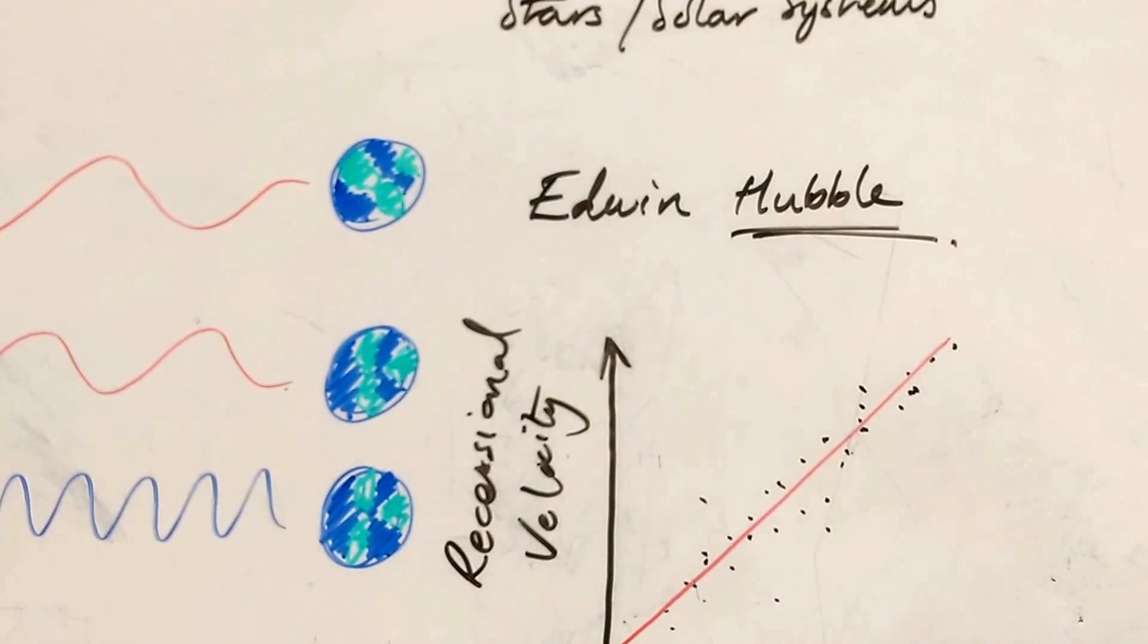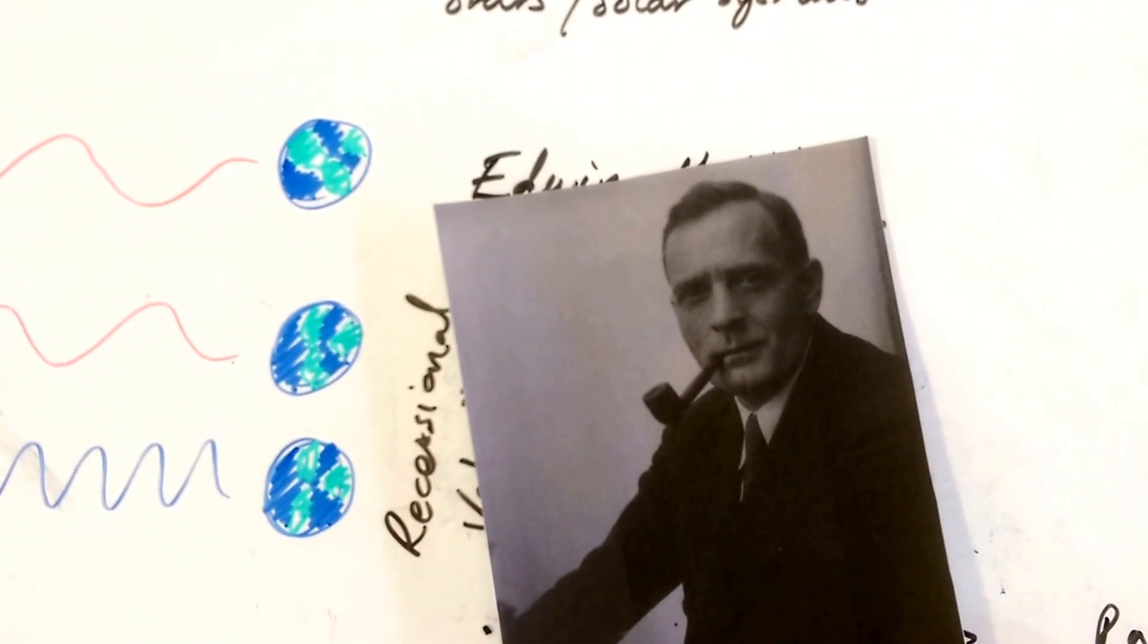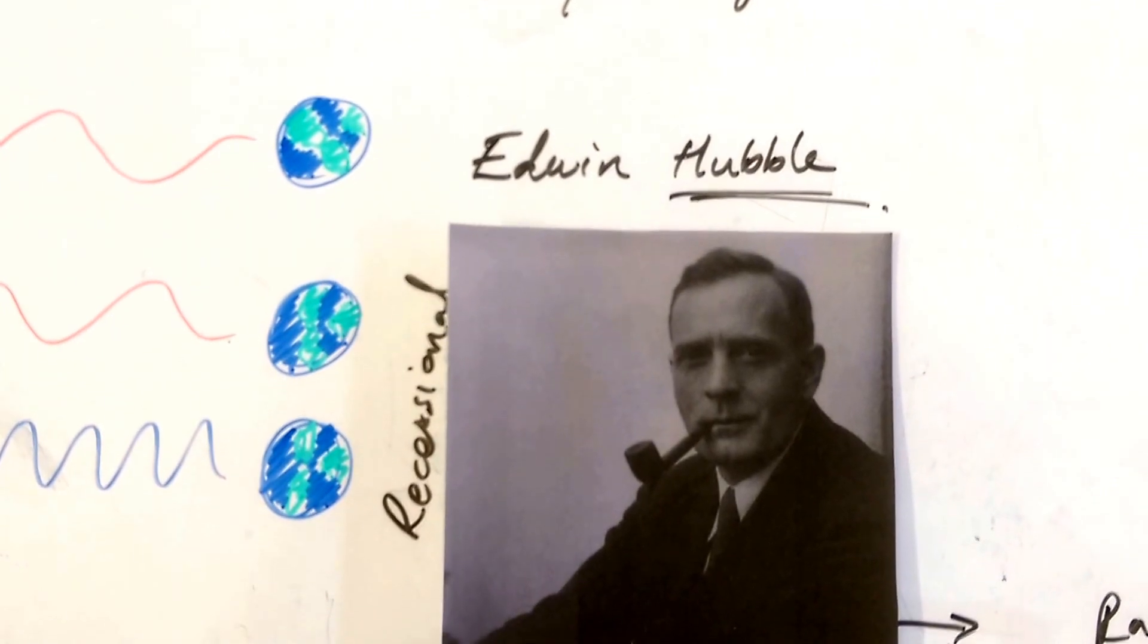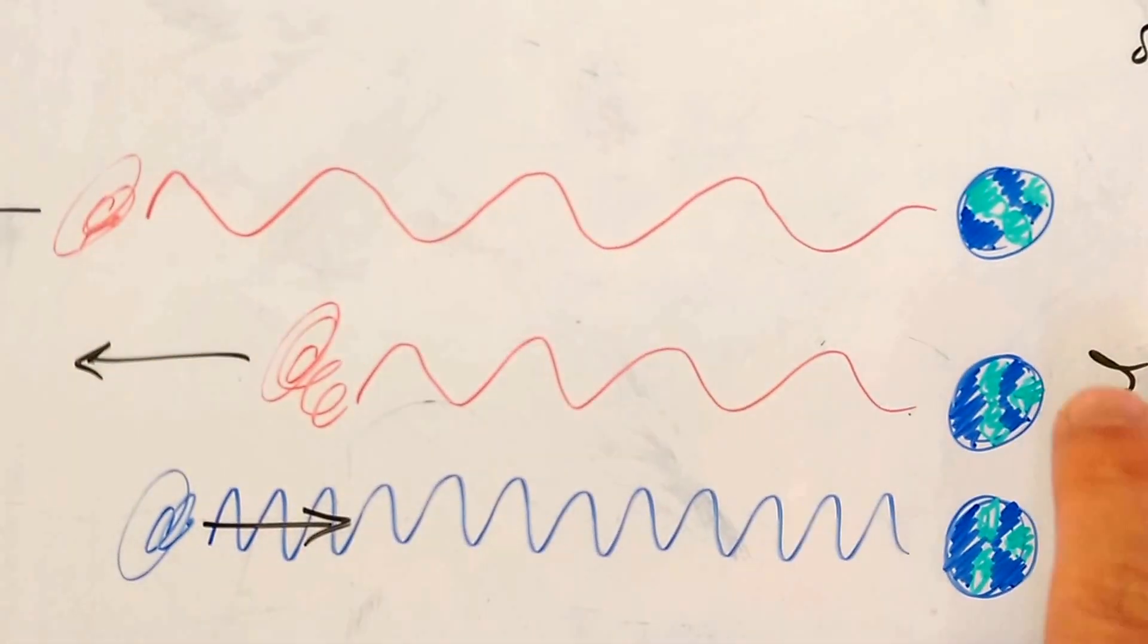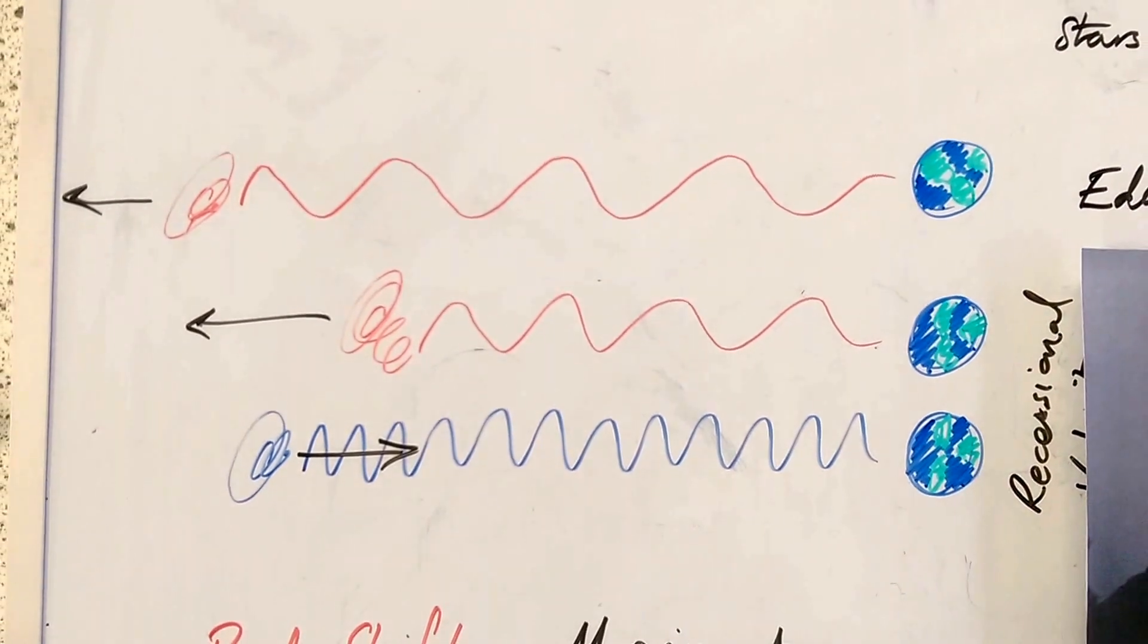Edwin Hubble is a famous astronomer. He's this rather dapper-looking gentleman here. What he did was he sat here on Earth and he measured the light which came from distant galaxies.